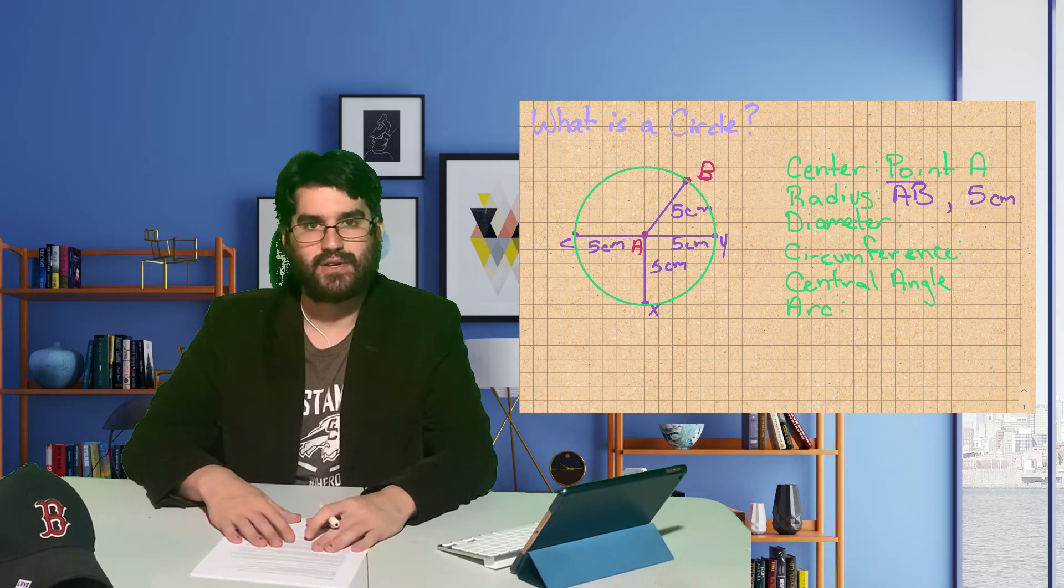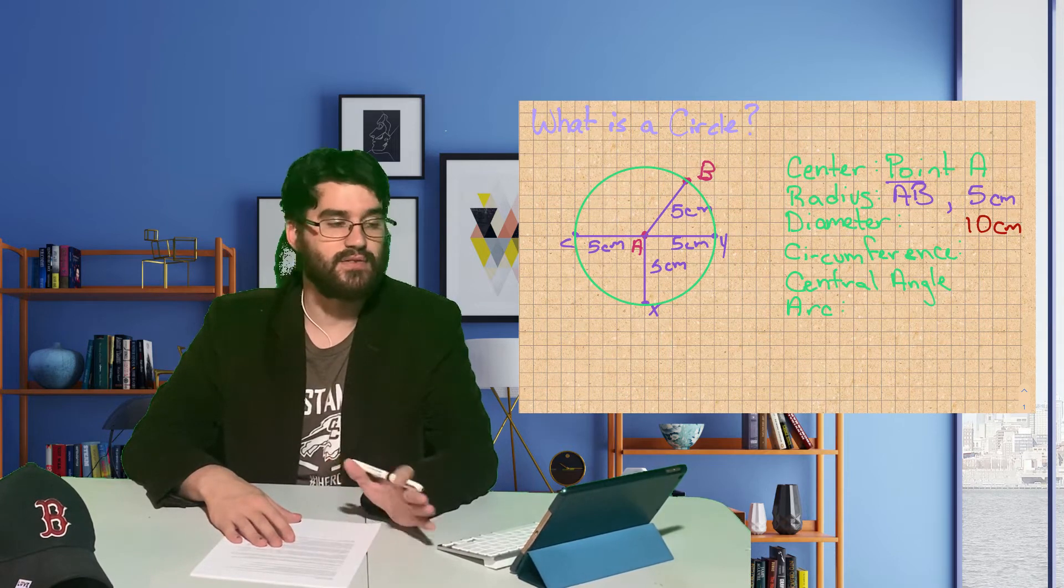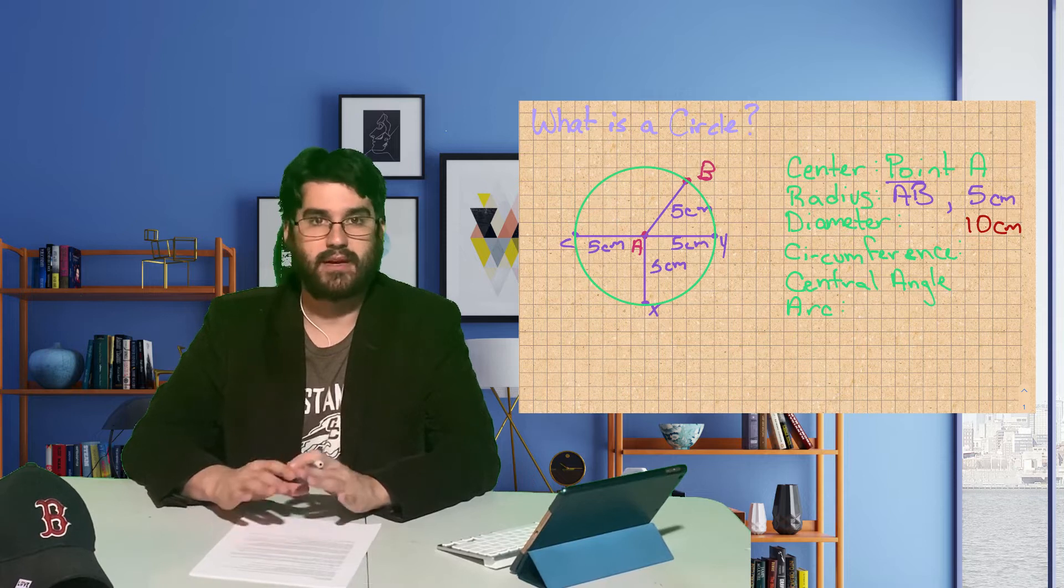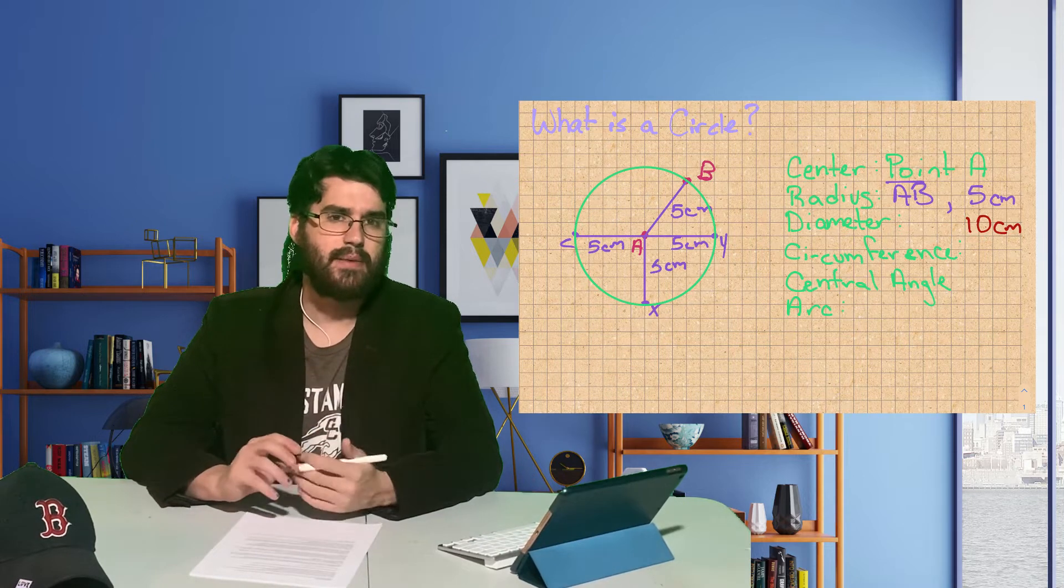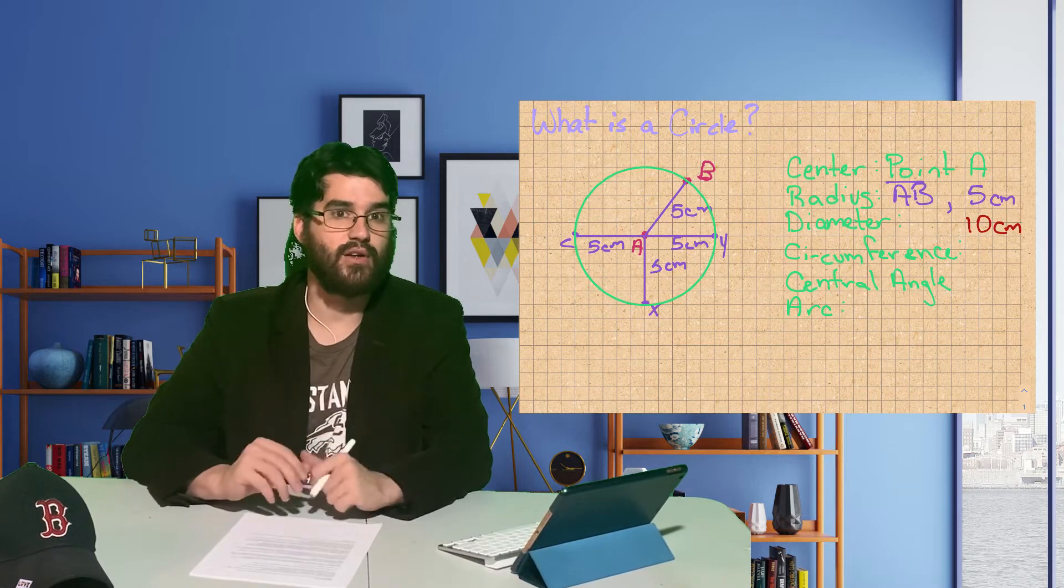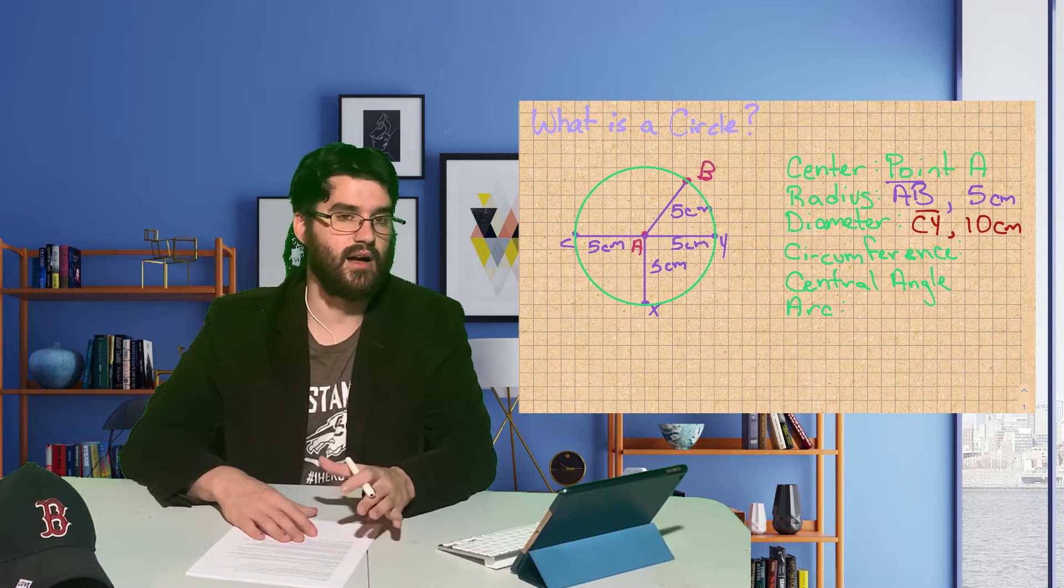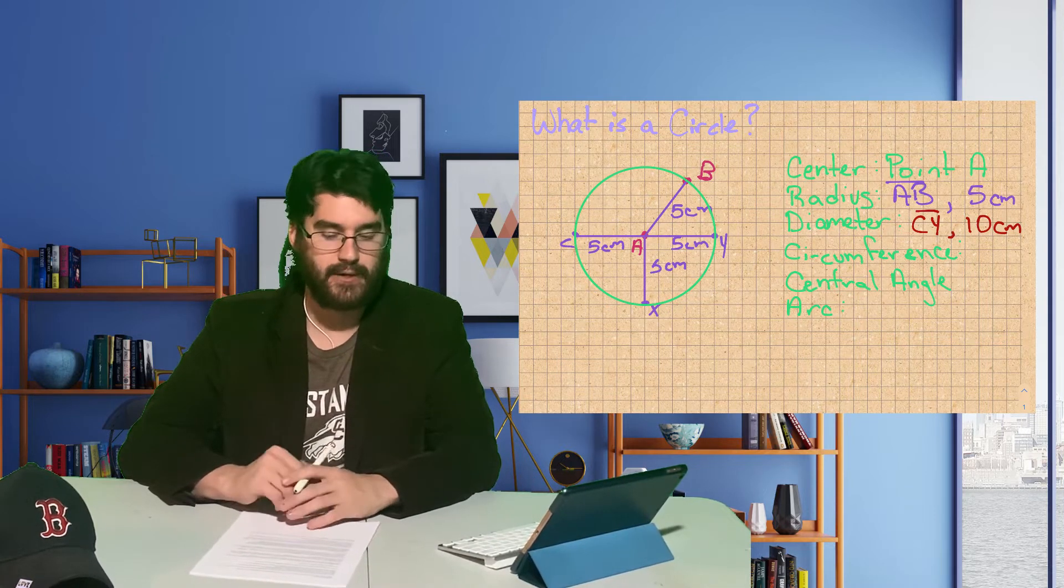The diameter of a circle is twice the length of the radius. The diameter of circle A is 10 centimeters long. A diameter is a segment whose endpoints are both on the circle and passes through the center. In this circle, segment CY is a diameter.